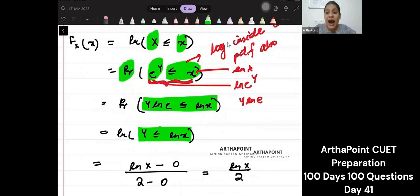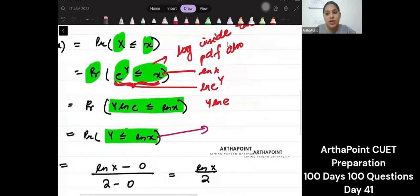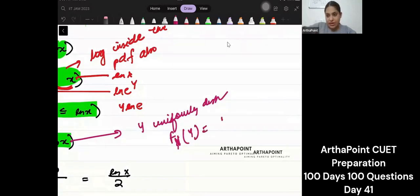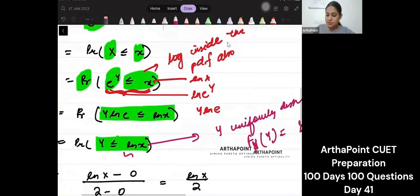Now I know that y is uniformly distributed. So if y is uniformly distributed then how do we find the CDF of y? It is whatever upper limit is there. So upper limit minus a upon b minus a. This is how we find it.